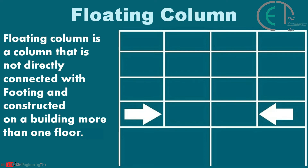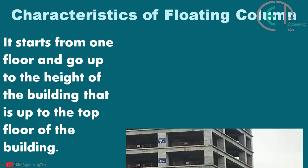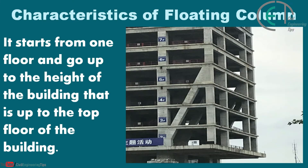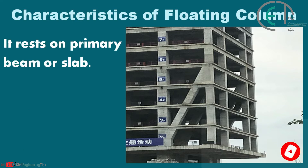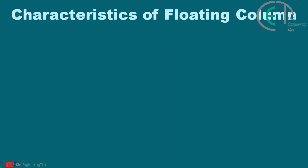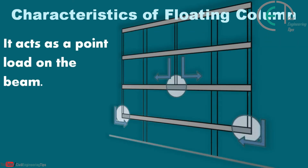A floating column is constructed on a building on more than one floor. Now let's look at the characteristics of a floating column. It starts from one floor and goes up to the height of the building, that is, up to the top floor. It rests on a primary beam or slab and acts as a point load on the beam.